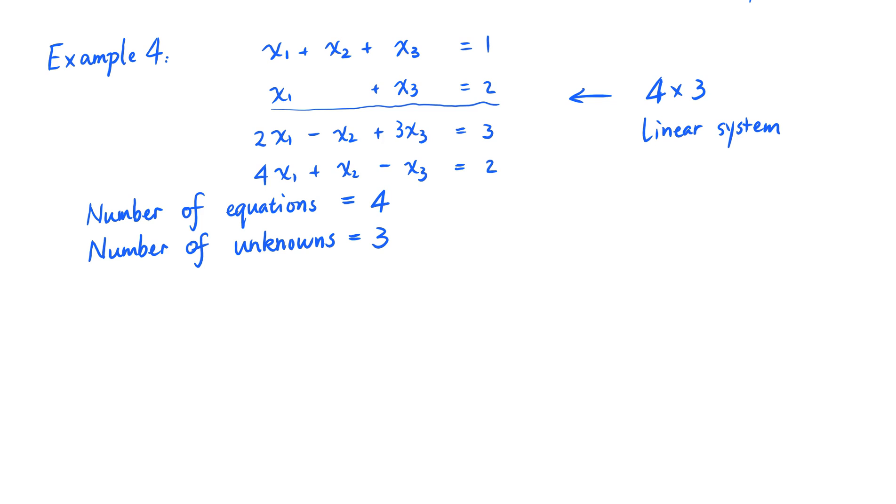And the reason we want to do this is because this way it's visually much clearer which coefficient is in front of which unknown so that we don't get confused. And also, the missing x sub 2 is really, you can think of it as x sub 1 plus 0 times x sub 2. So the coefficient in front of x sub 2 is just 0. And this is still a 4 by 3 linear system because it's 4 equations about 3 unknowns.